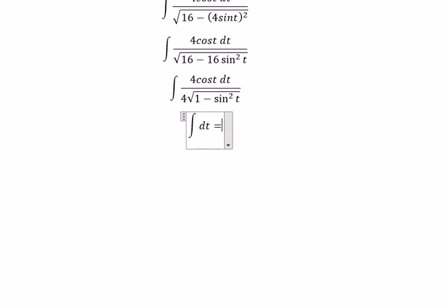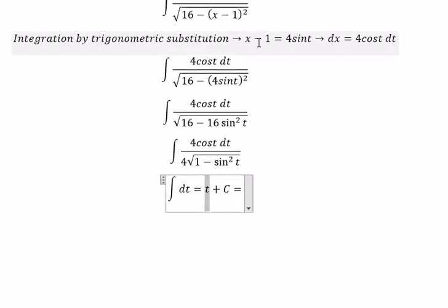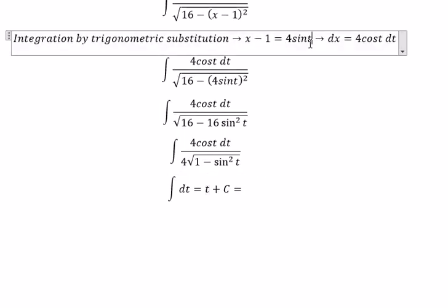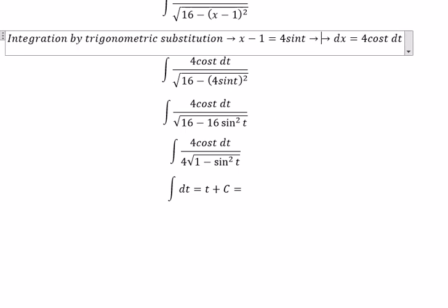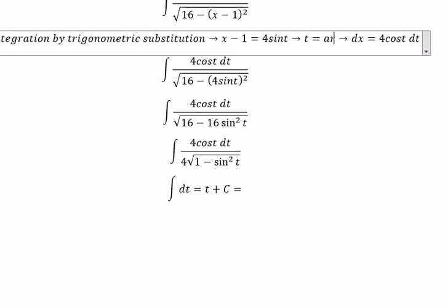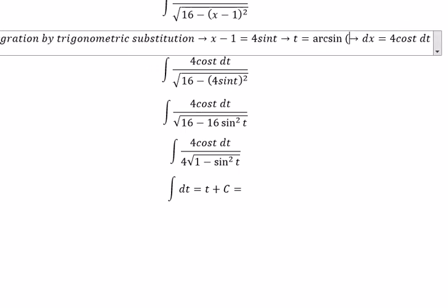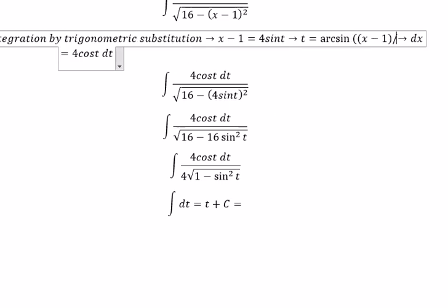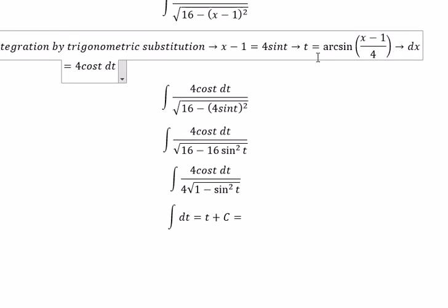And now we got t plus C. For t, we need to change back for x. So we divide both sides with number 4, and we got t equal to arcsin of x minus 1 divided by 4. So we put this one in here.